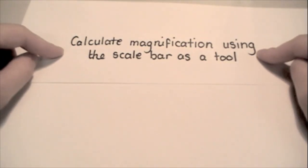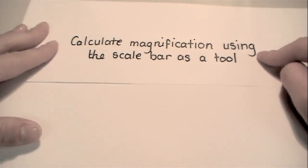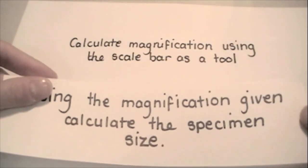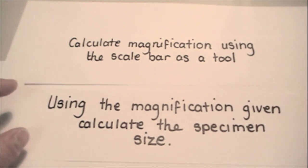We have calculated magnification using the scale bar as a tool. We found out that it was times 2600. So what we're going to now do is we're going to use that times 2600 magnification to calculate the actual specimen size of that cell.